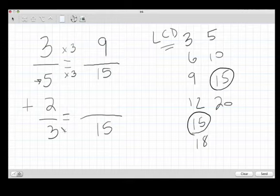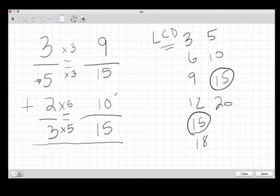And you ask yourself, how did I go from 3 to 15? 3 times 5. So we have to do the top times 5. And we end up with 10 fifteenths plus 9 fifteenths.